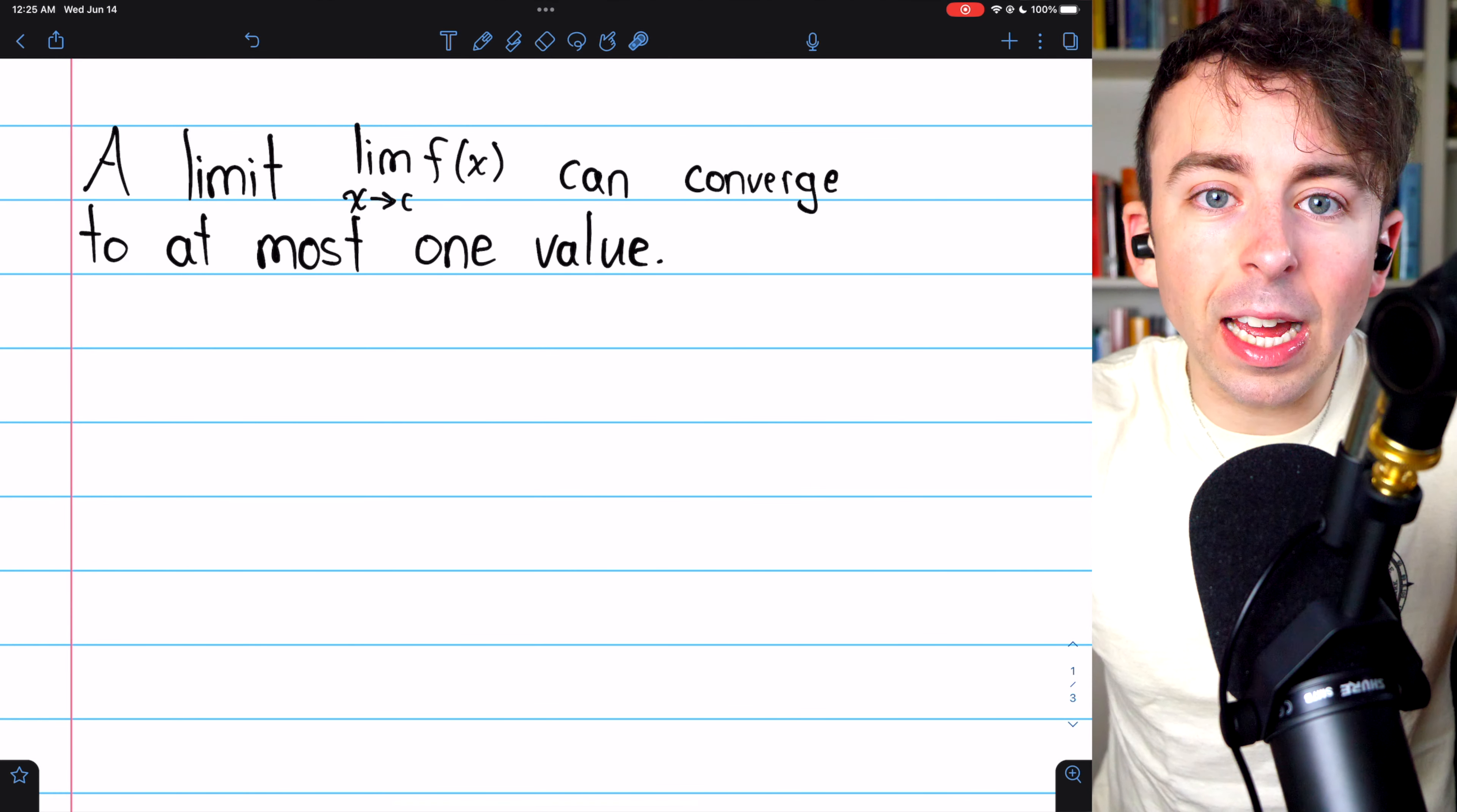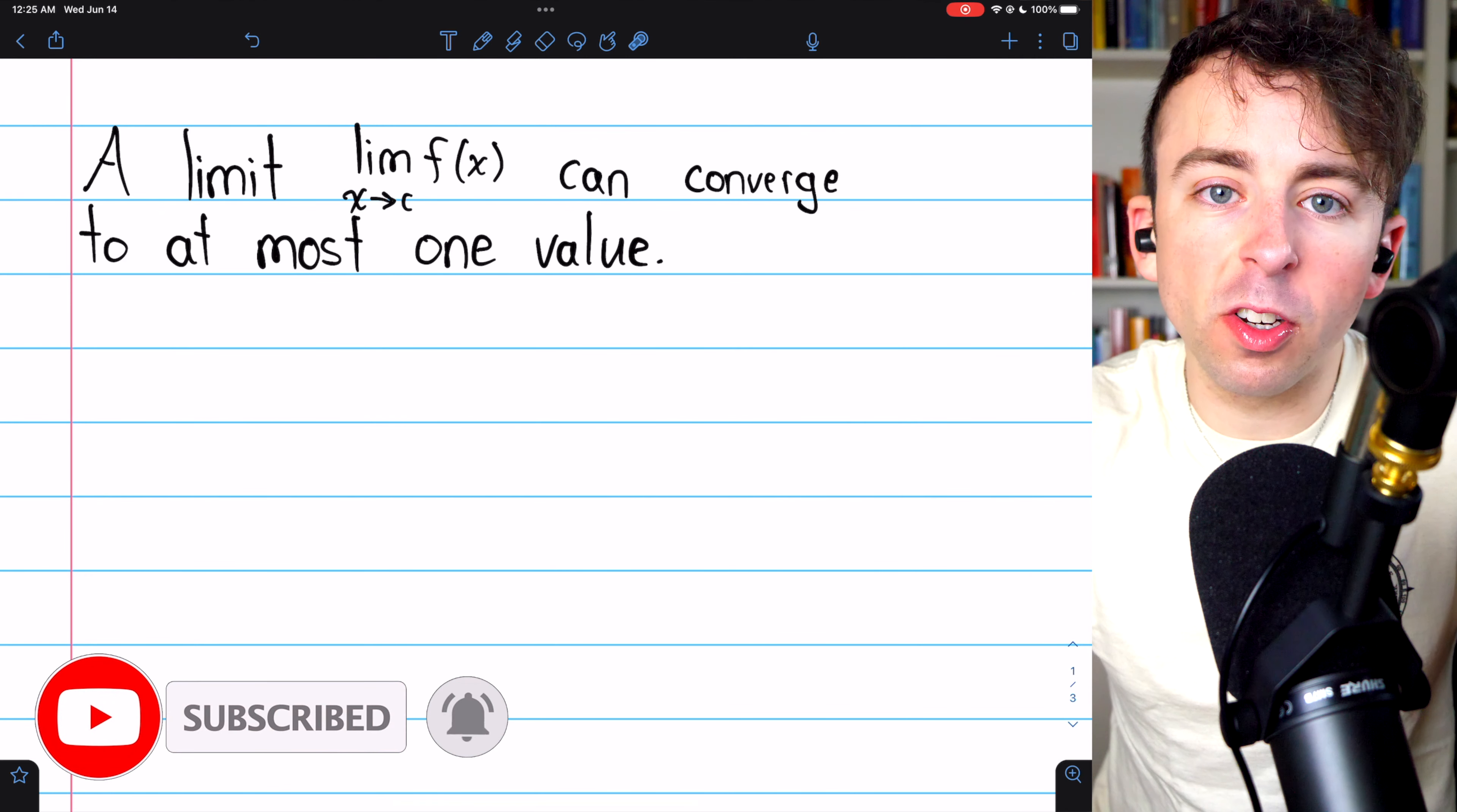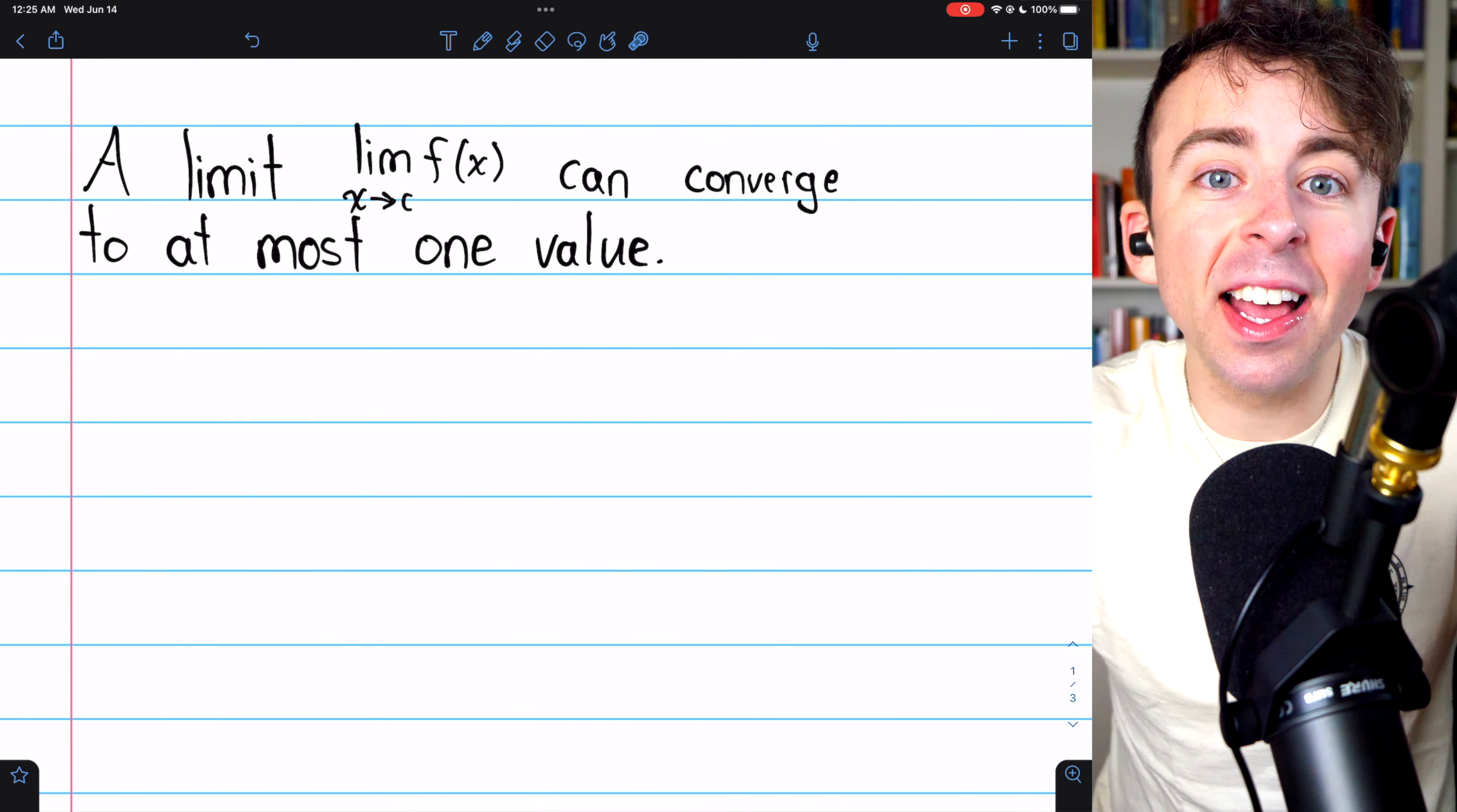We previously introduced the formal definition of the limit of a function, link in the description to that lesson. Now, you probably assume that at a point, if a function has a limit, it has only one.